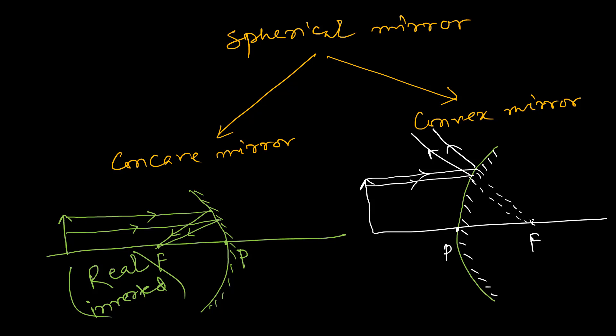So a real image can only be formed in the case of a concave mirror. Virtual images can be formed in a convex mirror as well as in a plane mirror. Virtual images are always erect in nature — they are never inverted. In the case of a convex mirror, the image formed is virtual and erect, which means it cannot be obtained on a screen. Now, we will make a comparison between real image and virtual image.